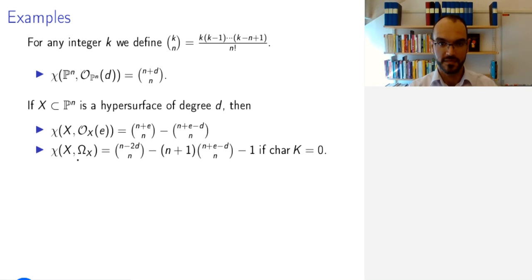Let's look at a different sheaf. So let's look at the cotangent sheaf. It turns out that for a hypersurface of degree d inside projective space, then over a field of characteristic zero, we have this formula for the Euler characteristic.